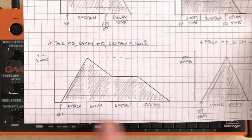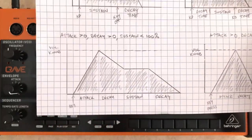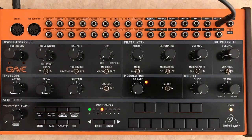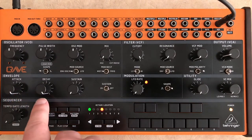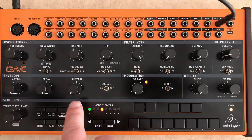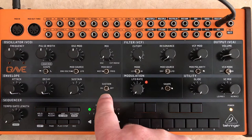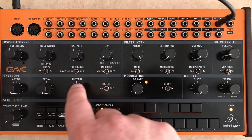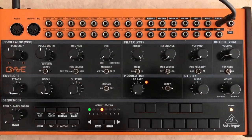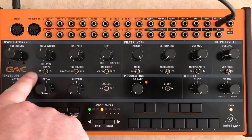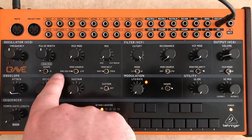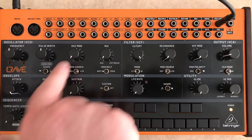The only way to get this modulation to happen again is to press the key again. This is unlike the LFO, which is just a continuously running thing. In the envelope, let's set our attack and decay time to their maximum levels. We're going to set the sustain to zero and make sure it's turned off. In the oscillator section, let's set our pulse width to right around the middle, and the oscillator mod and the mix knob we're going to turn all the way to zero.